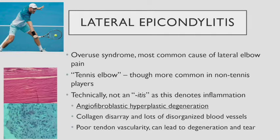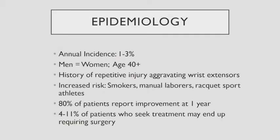Technically we call this epicondylitis, but it's actually not an inflammatory condition — it's an osis. There's this buzzword: angiofibroblastic hyperplastic degeneration, which means blood vessels come in, things get degenerative, and the collagen becomes very disorganized. On the left you can see nice longitudinal collagen sheets; tennis elbow looks like a diffuse disarray of unorganized collagen. That tendon has bad vascularity, leading to degeneration and tears. It's very common — 1% to 3% of patients develop it per year, equally in men and women, usually over age 40. About 80% of patients get better after a year regardless of treatment, though not quickly. Of those who seek treatment, about 4% to 11% end up having surgery.